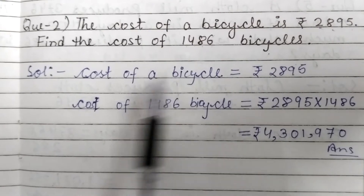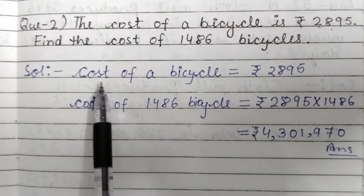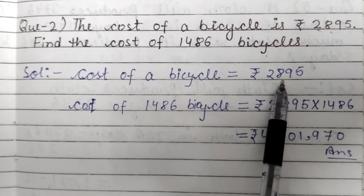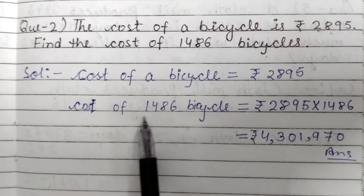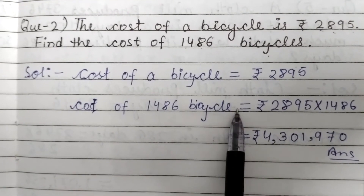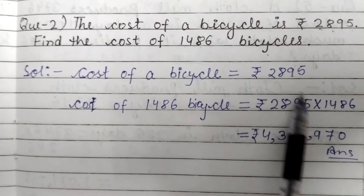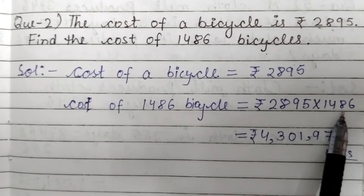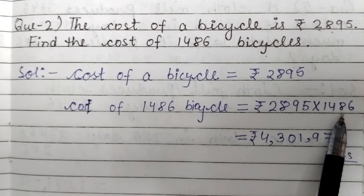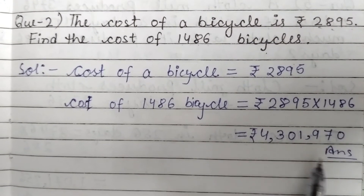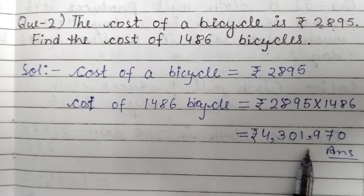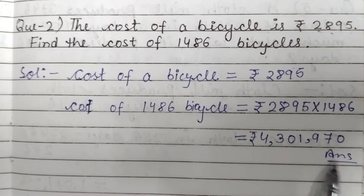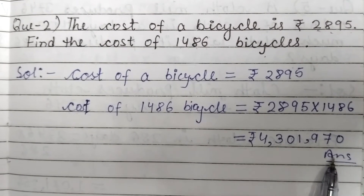We will solve it in the same way. Cost of a bicycle is given. Cost of 1,486 bicycles — total cost — we will do the multiplication of the number asked. After multiplying, you will get the answer as shown.